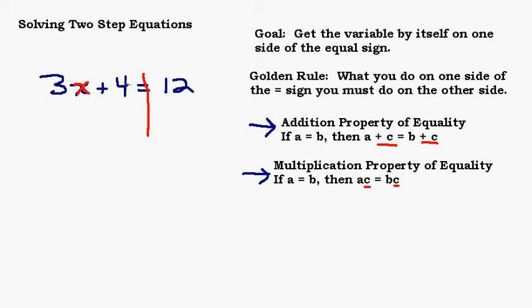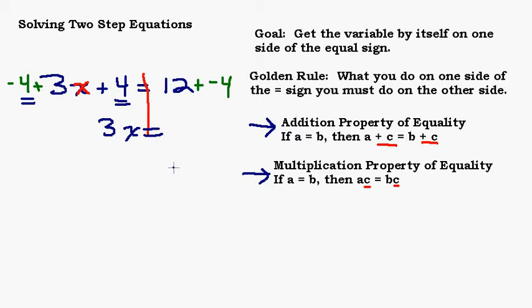We're going to get rid of this plus 4 by adding a negative 4 to both sides. Now combining like terms: on the left-hand side, we've got a positive 4 and a negative 4, and those cancel each other out — which is what I wanted. So what's left is just 3X. Bring down your equal sign — always make sure you do that, it's like your balance. On the right-hand side, I have 12 plus negative 4, which is 8, same as 12 minus 4.